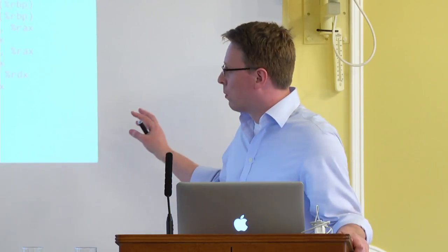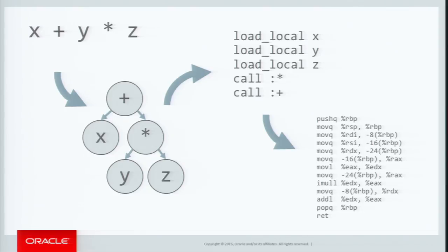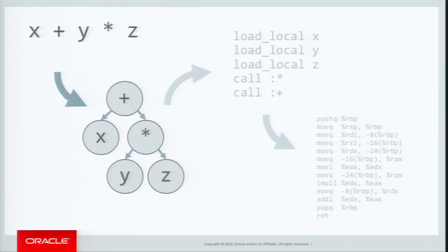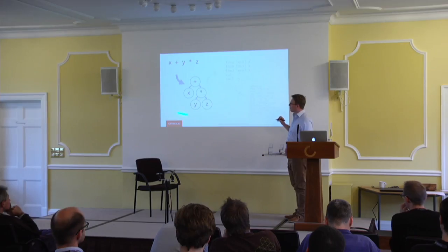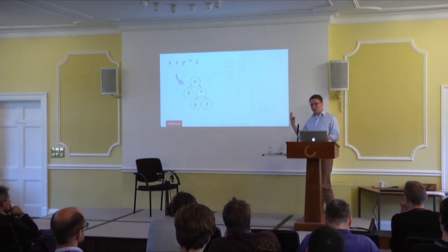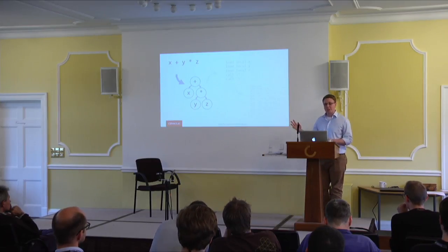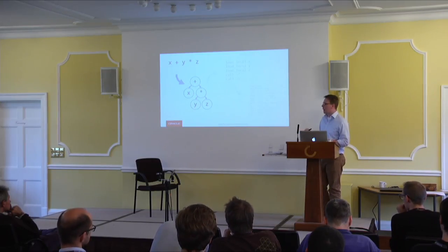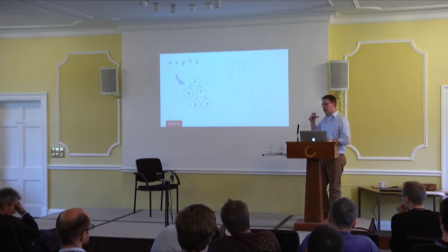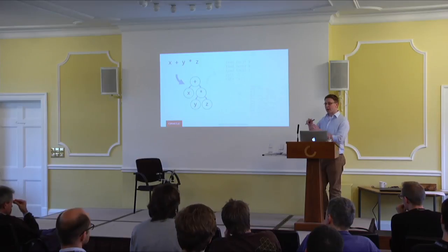In Truffle and Graal, both the last stages are done for you — all you need to do is write an AST interpreter. In reality you do have to do quite a lot of tuning to make it really high-performance, but you could get reasonably fast very, very easily, and then extremely fast with a bit more specialist knowledge. JRuby+Truffle is the fastest implementation of Ruby by far, with reasonable effort — a few students working for a few years.